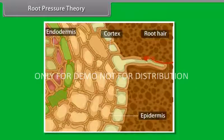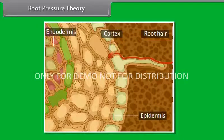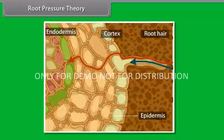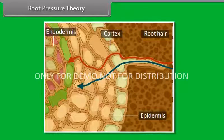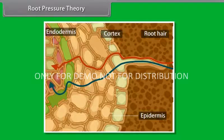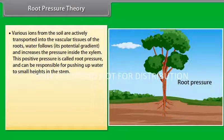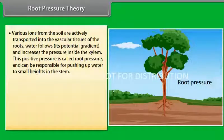Root Pressure Theory. Till now we have learnt how plants absorb water from the soil and move it into the vascular tissues. Now, we will learn how this water is transported to various parts of the plant. Various ions from the soil are actively transported into the vascular tissues of the roots. Water follows its potential gradient and increases the pressure inside the xylem. This positive pressure is called root pressure and can be responsible for pushing up water to small heights in the stem.